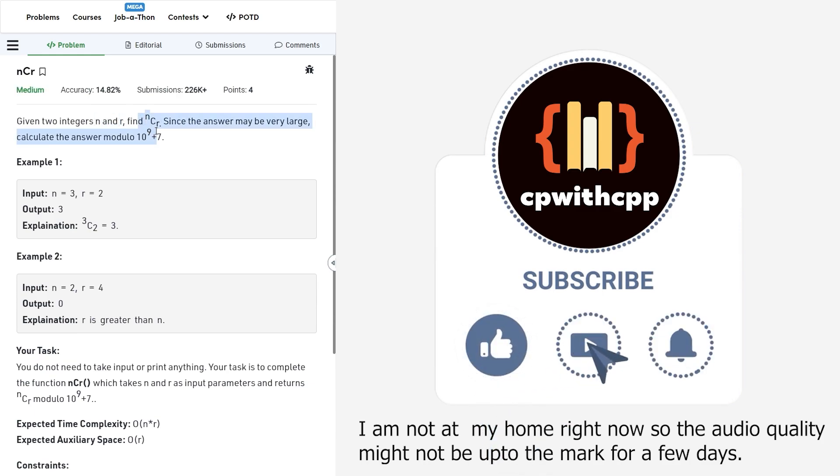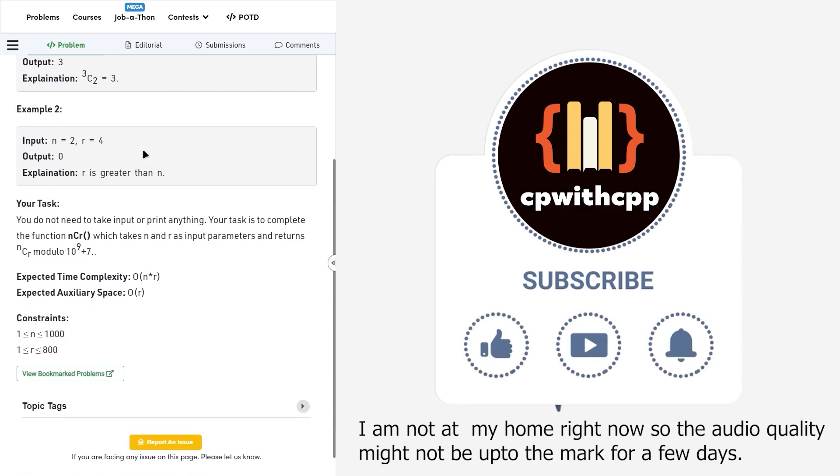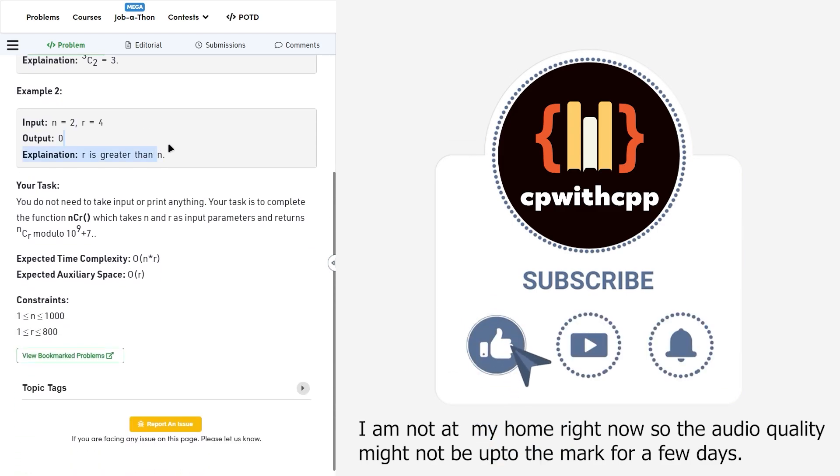Basically this problem has given you two integers n and r, and we are asked to find the value of NCR modulo 10 to the power 9 plus 7.